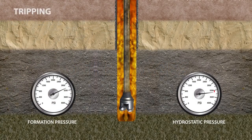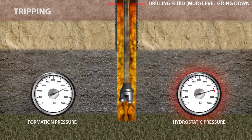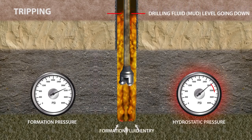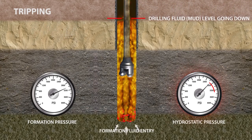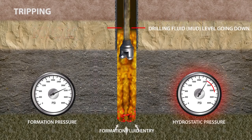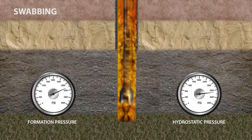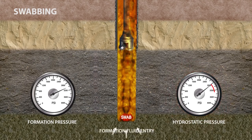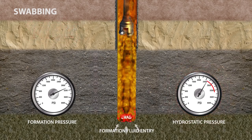While tripping, if there is a failure to keep the hole full of mud to maintain adequate hydrostatic head, the hydrostatic pressure will be less than the formation pressure, inducing a kick. Additionally, swabbing — while pulling out of a hole too fast — can produce a suction effect, resulting in a decrease in bottom hole pressure large enough to allow formation fluids to enter the wellbore, creating a kick.